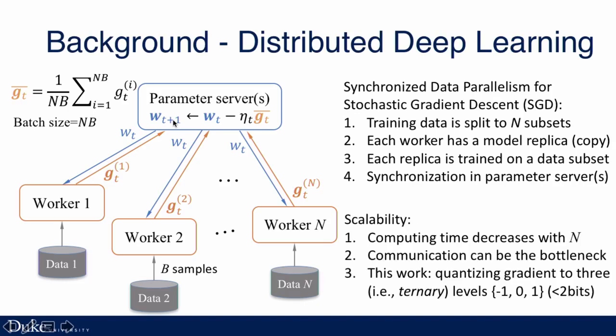In large-scale distributed deep learning, we have a very large N. When we have a larger N, which is the number of workers, the computing time decreases. However, since we have more workers, the communication time increases. So in very large-scale deep neural network training in distributed systems, the communication time is the bottleneck. This work focuses on quantization of the gradients to reduce the communication of gradients, so we can get better scalability in large-scale distributed training systems.